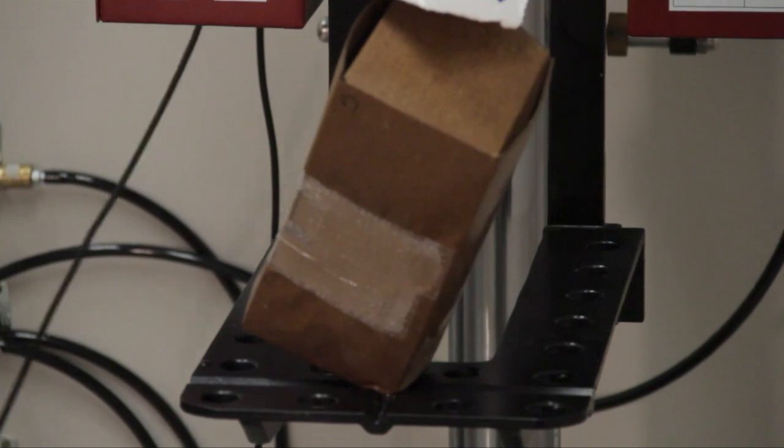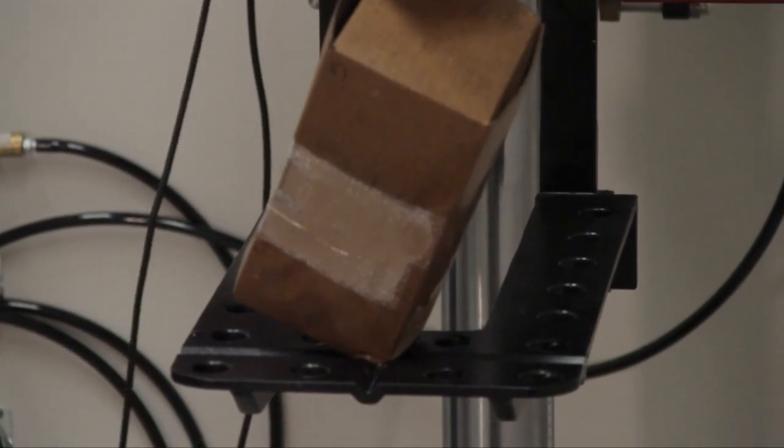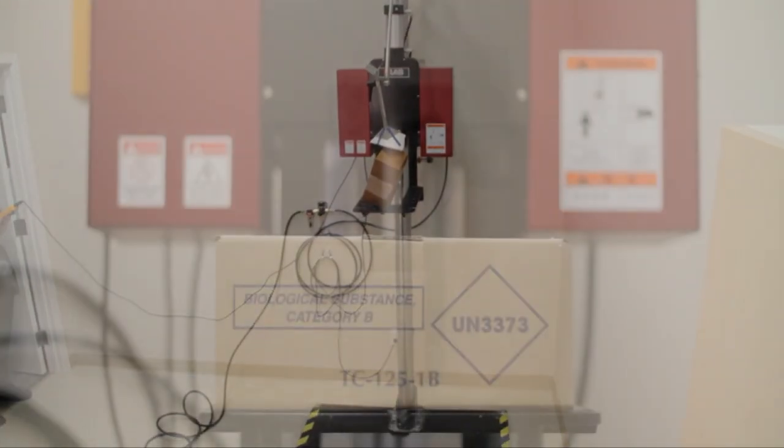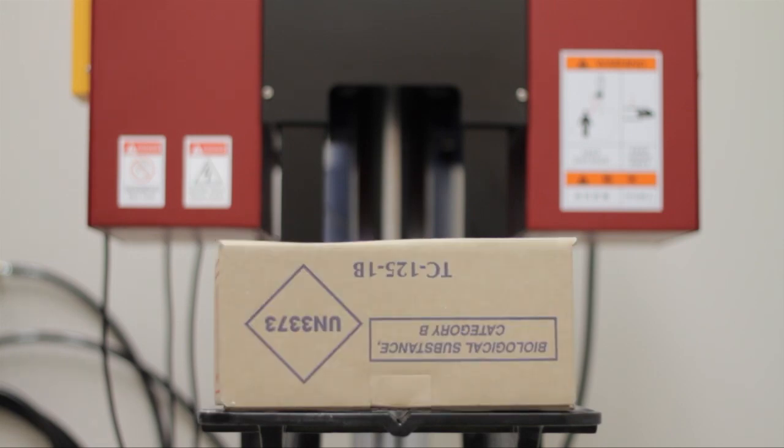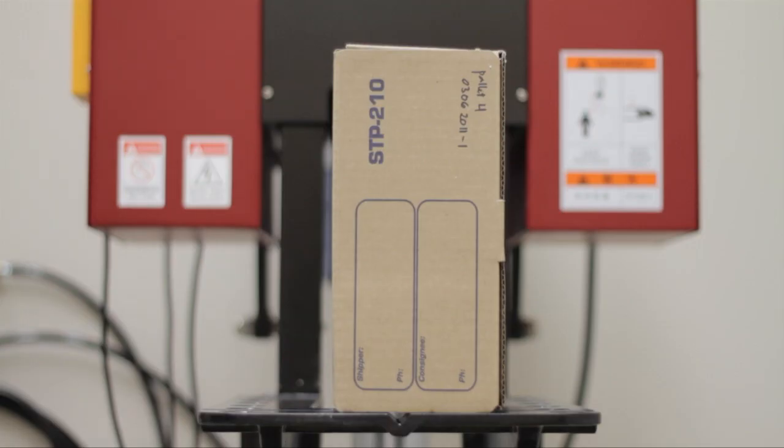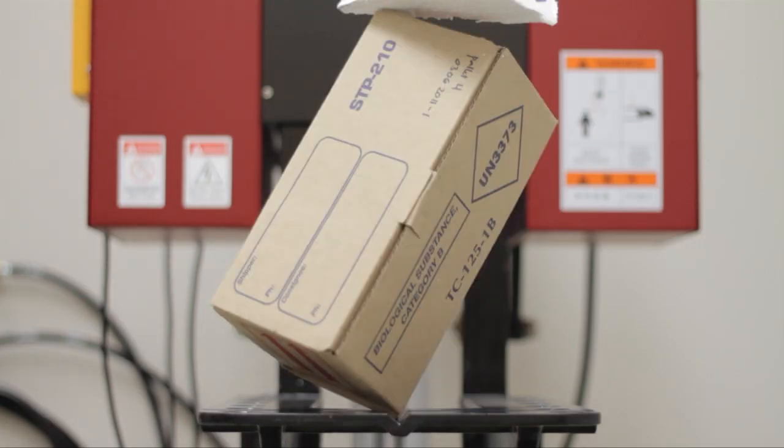Once the package has been conditioned, it must be dropped in five different orientations: flat on the bottom, flat on the top, on the longest side, on the shortest side, and on a corner.